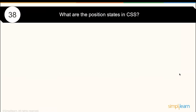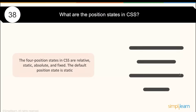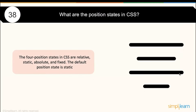What are the position states in CSS? There are four positions in CSS: relative, static, absolute, and fixed. The default position state is always static.